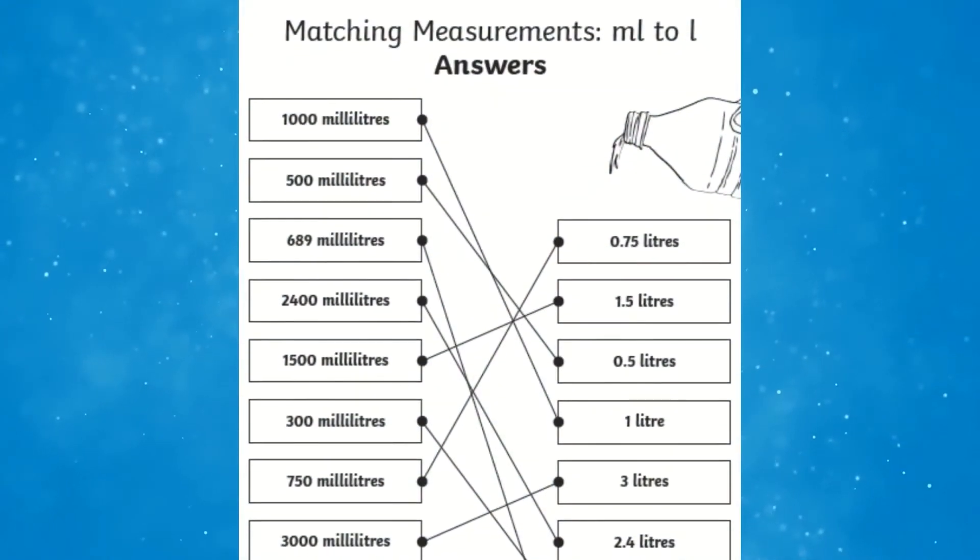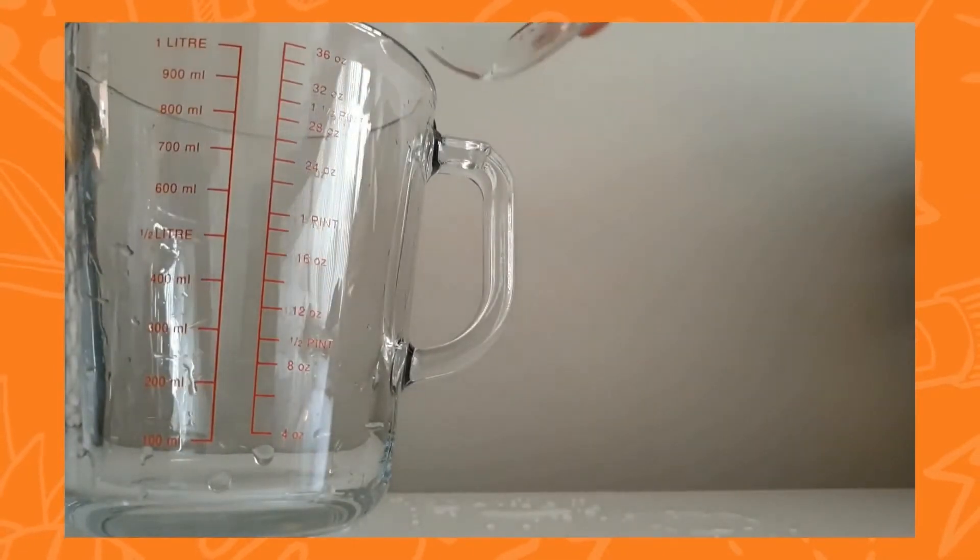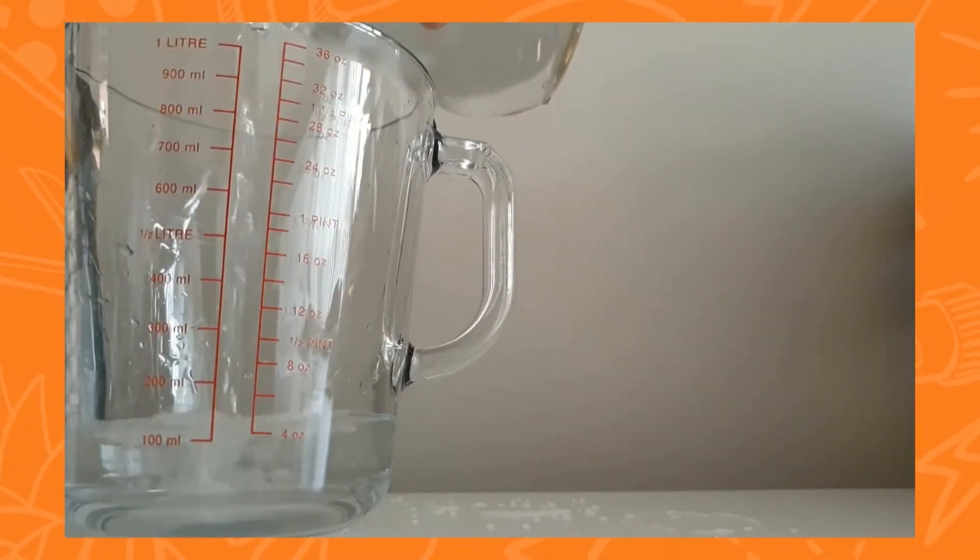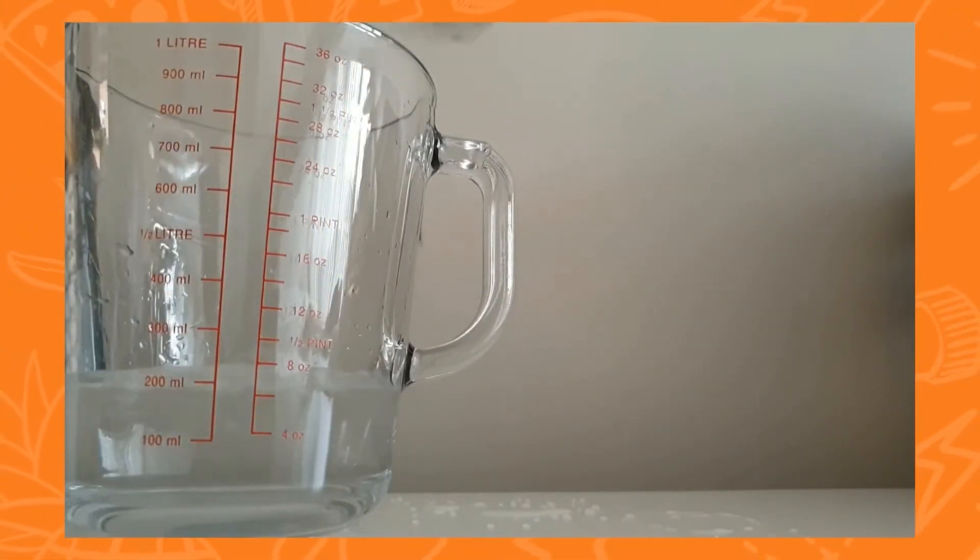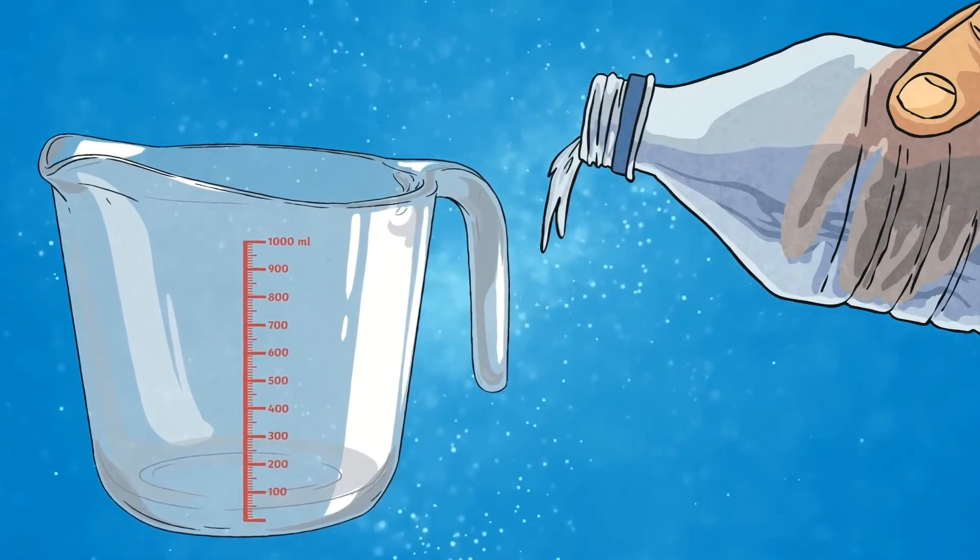Included is an answer sheet if you wish to mark or for children to peer or self-assess. If you have a measuring jug with milliliters and liters, you can encourage your children to check their answers by pouring water into the jug to verify they have matched the equivalent measurement.